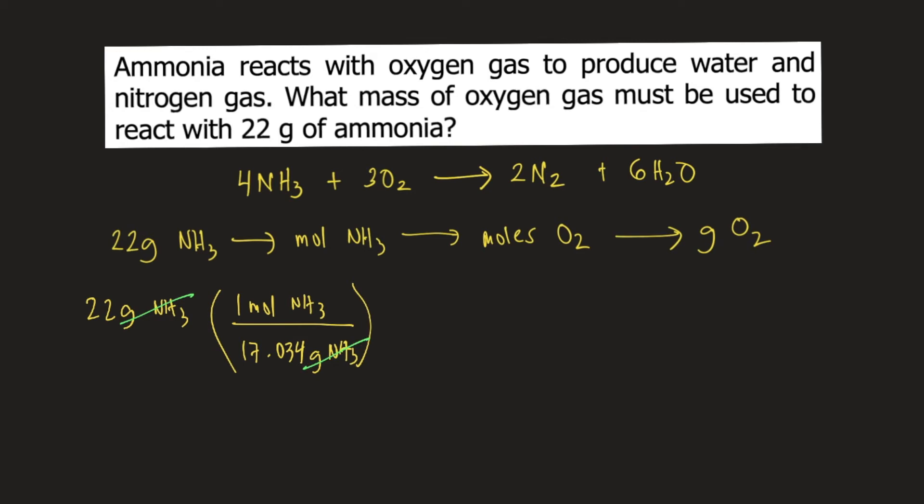Next we convert moles of ammonia to moles of oxygen gas. We use the balanced chemical equation to convert this. According to the balanced chemical equation, 4 moles of ammonia reacts with 3 moles of oxygen gas. Moles of ammonia will cancel, so we have moles of oxygen gas.